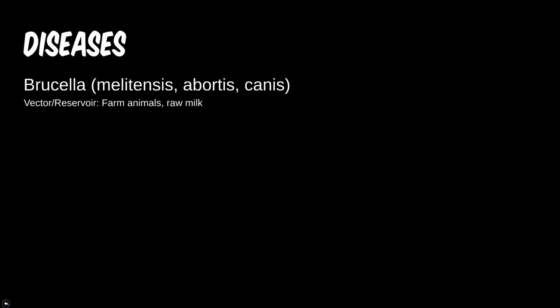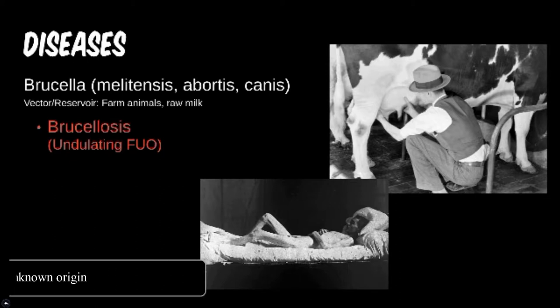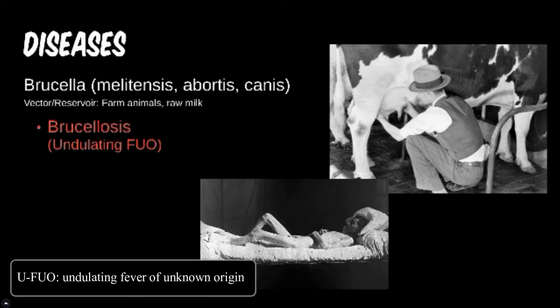The Brucella genus causes, who would have guessed, Brucellosis. This is transferred from infected animals, such as in unpasteurized milk or even animal-to-person contact. It can be difficult to identify, as these infections seem to have typical symptoms of the flu. The main factor you would look for is a patient with a fever that seems to come and go. This undulating fever can last months to years if not treated.